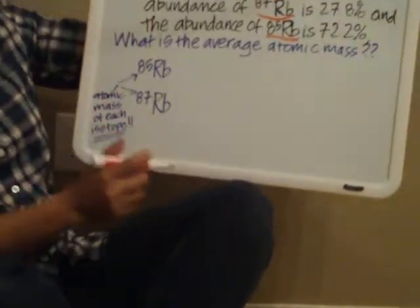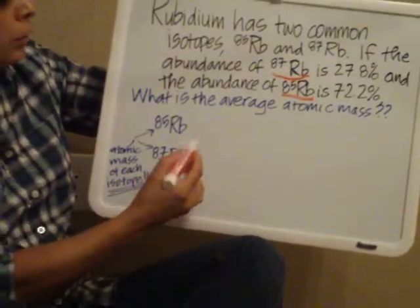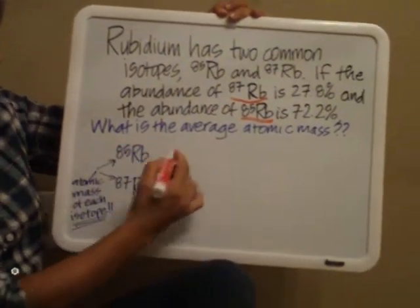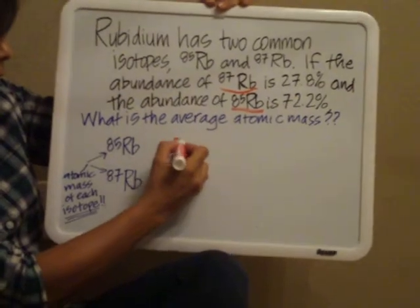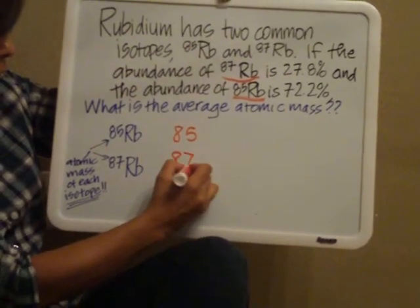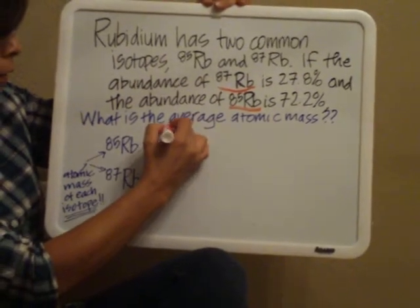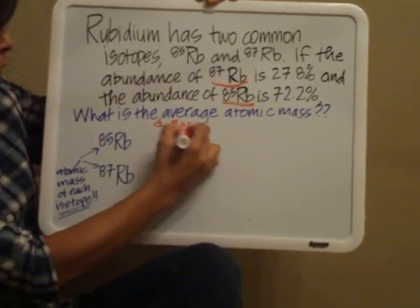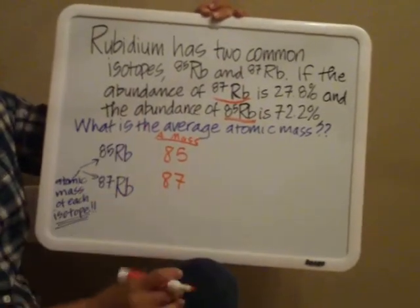Okay, so here's what you do. You look at the question and you're going to first list the mass of each of the isotopes. So for rubidium-85, it's going to be 85. And for rubidium-87, it's going to be 87. So that is going to be the atomic mass. I'm going to abbreviate a bit for each of the isotopes.